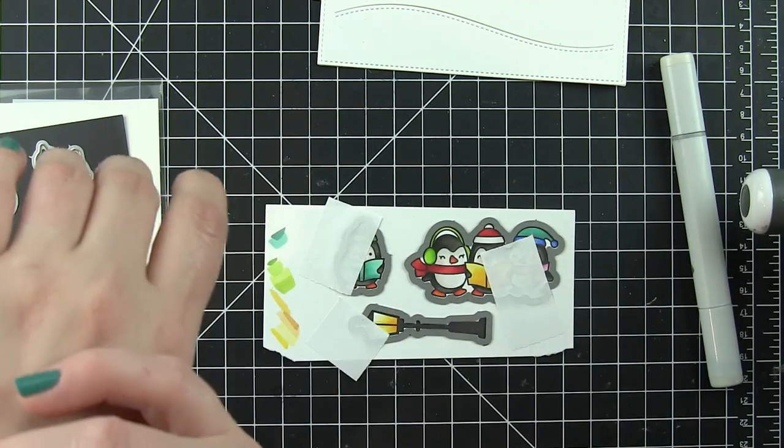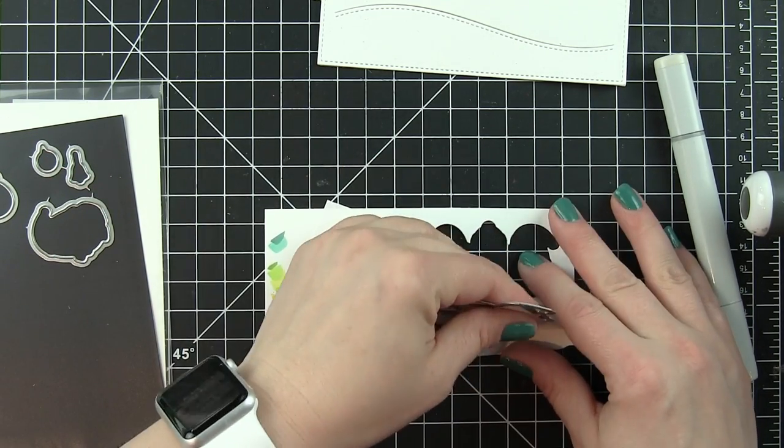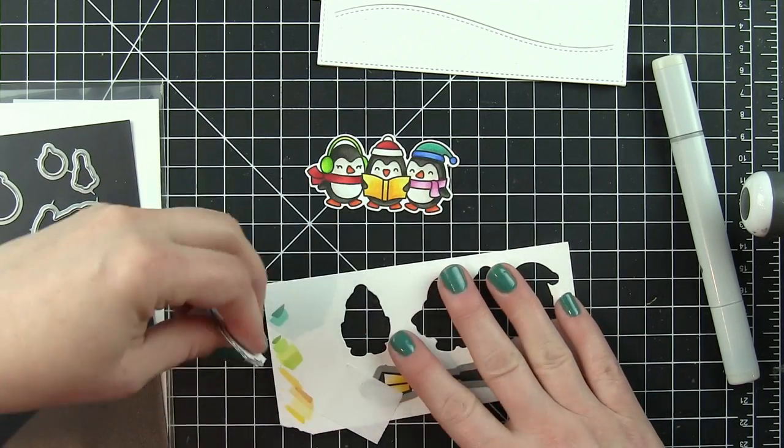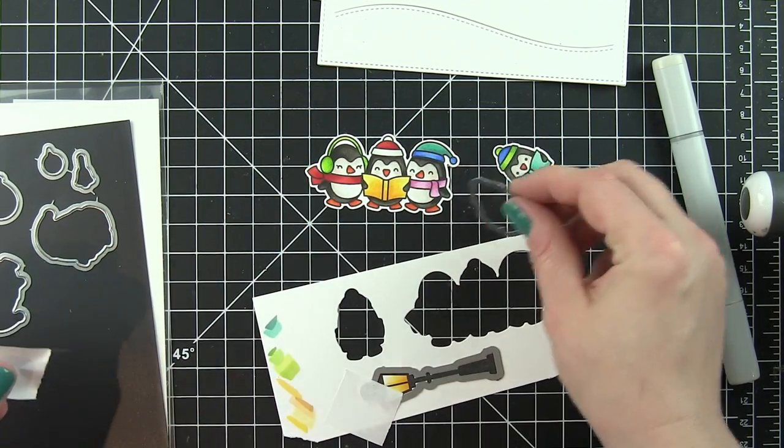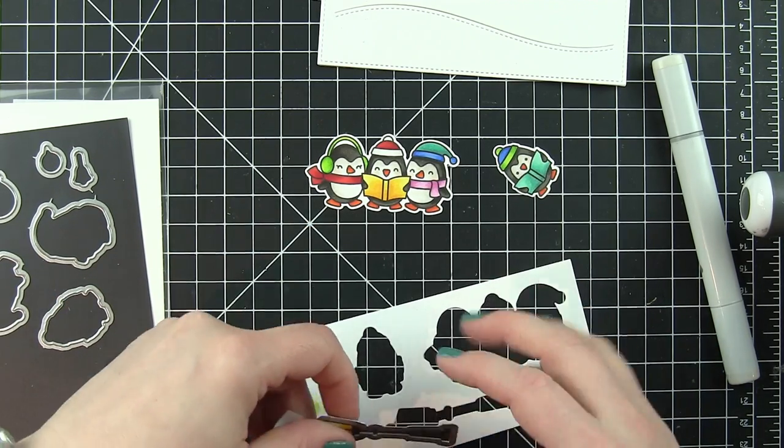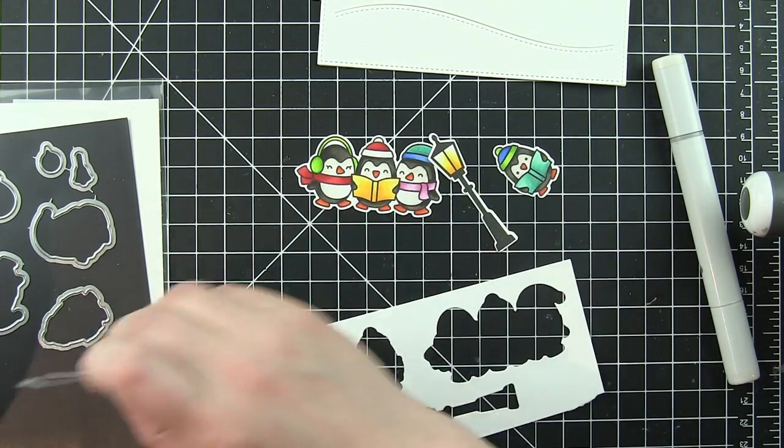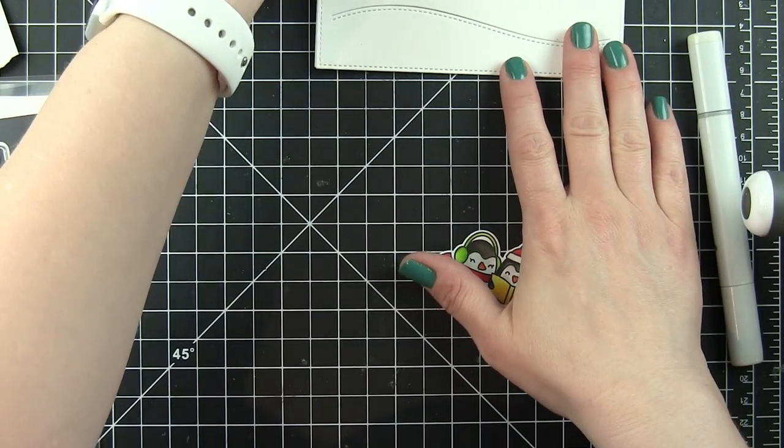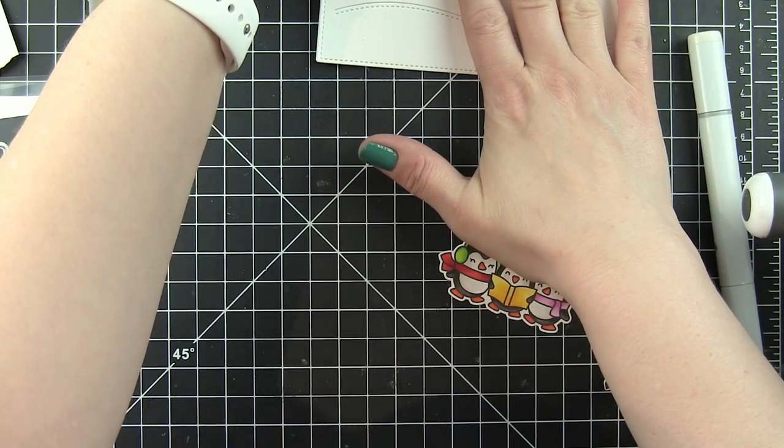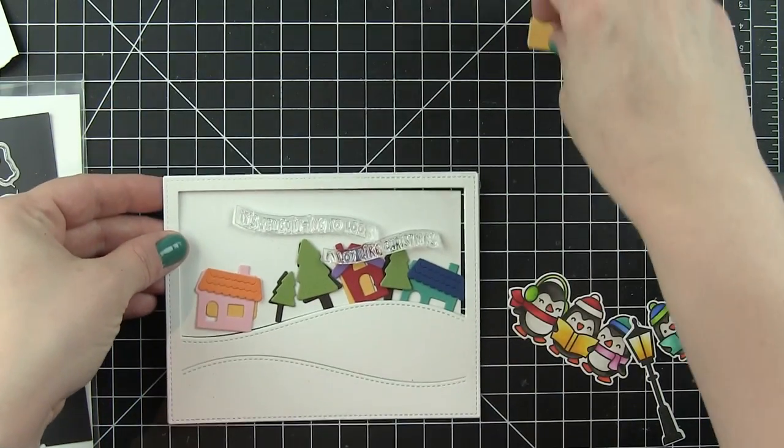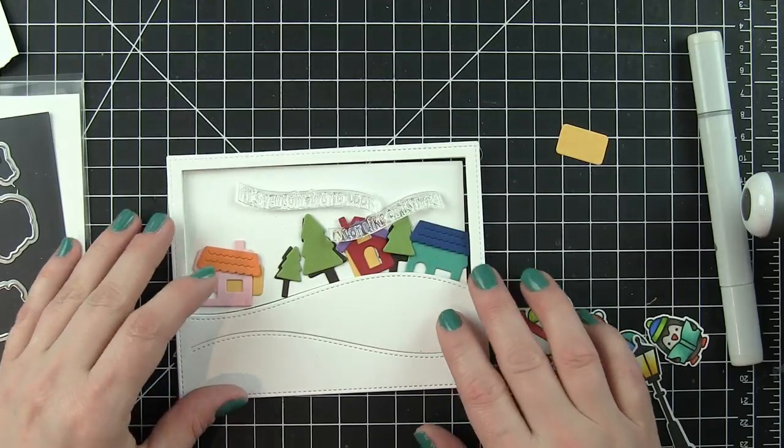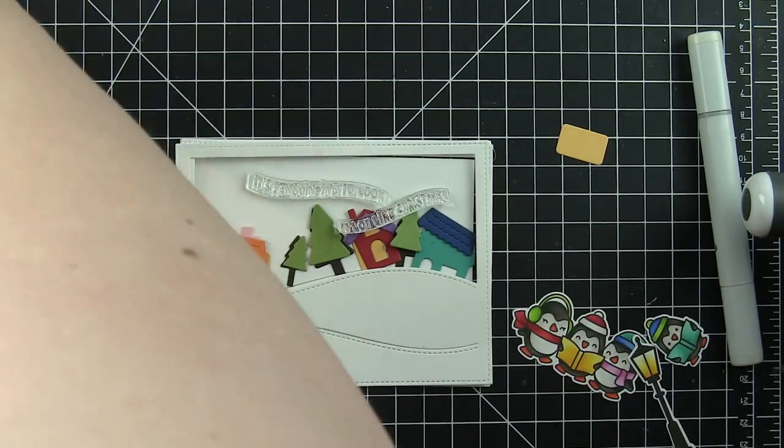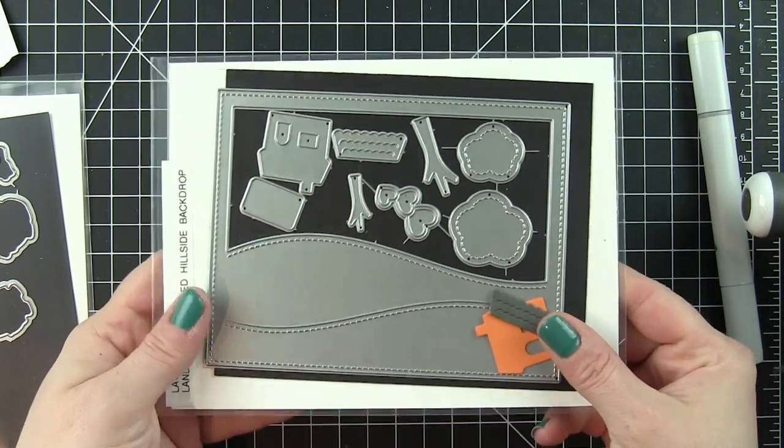Now, I am going to die cut these images with the coordinating Here We Go A Waddling dies. Just pop all of these out, and I have slowed down the video into kind of regular time. I speed through it a lot to kind of help save on time so you're not sitting there for an hour and a half or so watching me create a card and get distracted and all of that, but here are all of my components, and I slowed this down because I wanted to show you where everything came from where it's not speeding by.